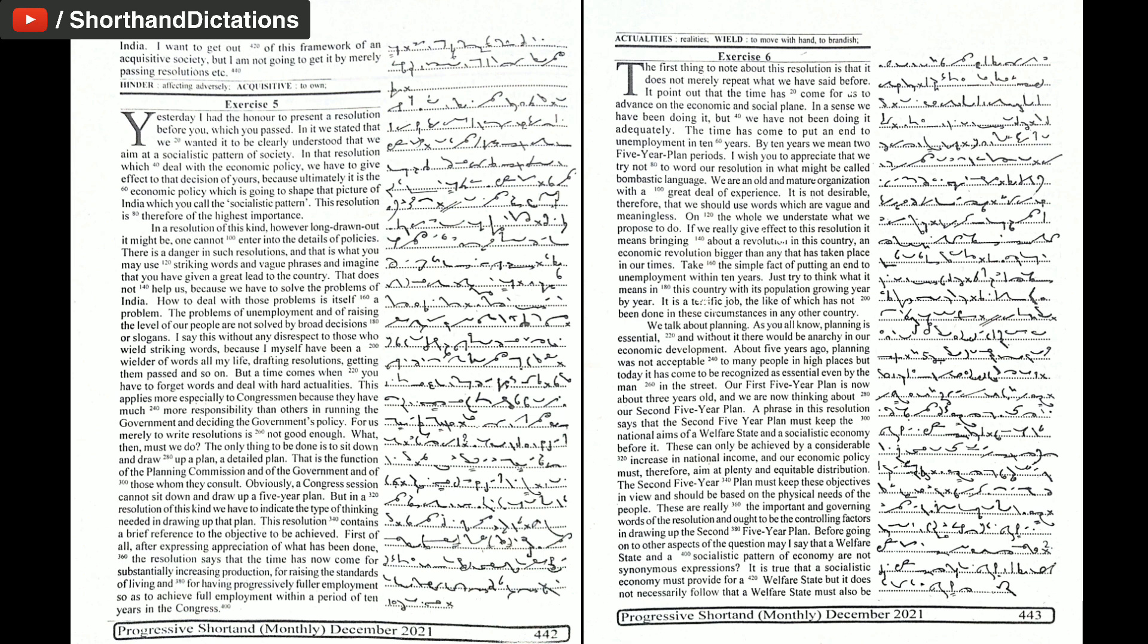A phrase in this resolution says that the second 5 year plan must keep the national aims of a welfare state and a socialistic economy before it. These can only be achieved by a considerable increase in national income and our economic policy must therefore aim at plenty and equitable distribution.